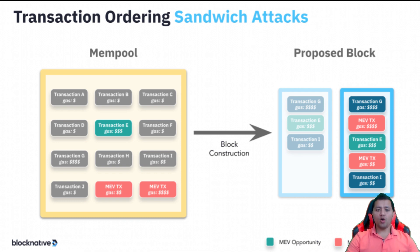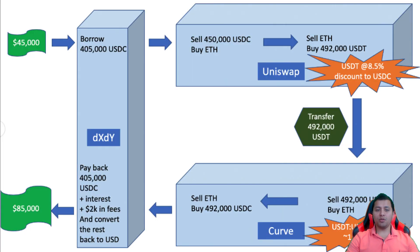MEV is powerful because it shows how reordering transactions can give rise to front-running and sandwich attacks. There are also other attacks possible with MEV, such as DEX arbitrage. This is basically if two DEXs are offering a token at two different prices — someone can buy the token on the lower-priced DEX and then sell it on the higher-priced DEX, creating an arbitrage opportunity.